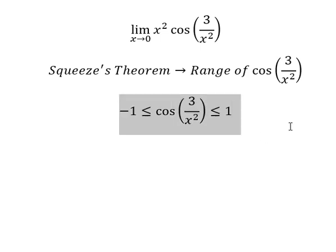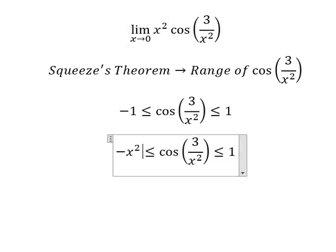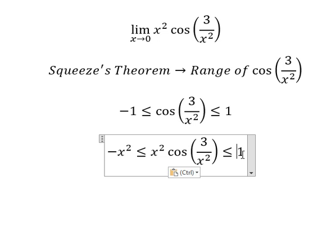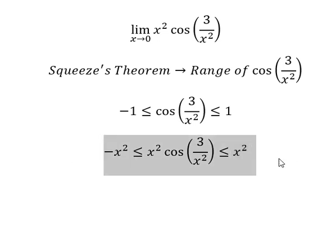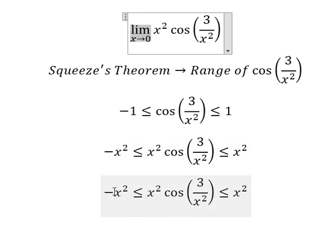Next, we multiply both sides by x square. Then we put the limit on both sides.